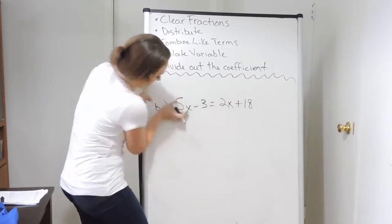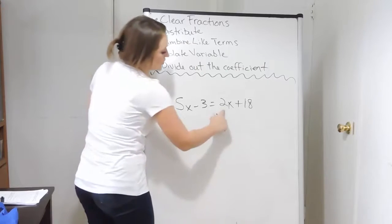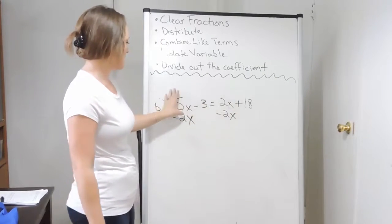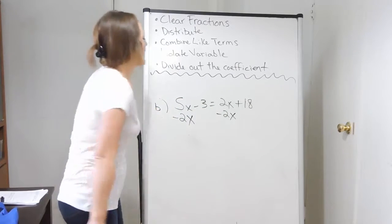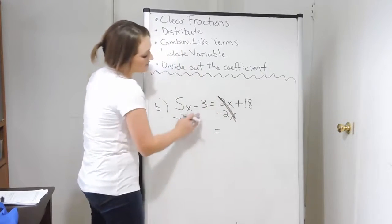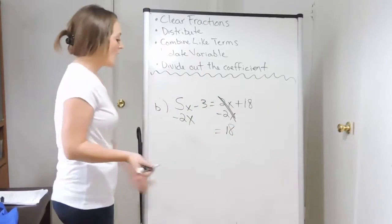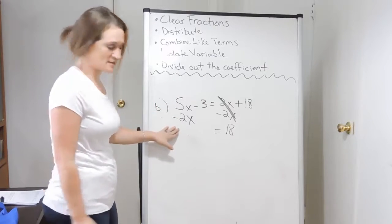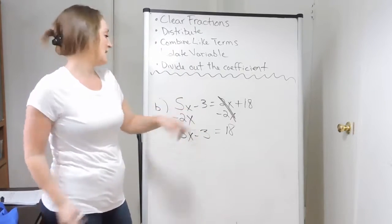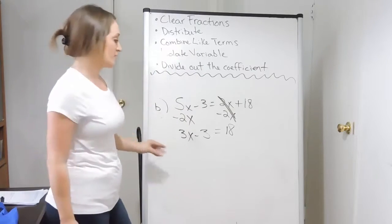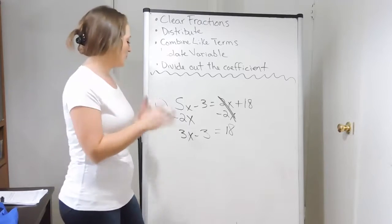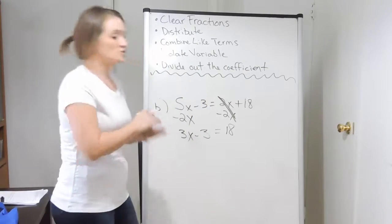I'm going to pick the left-hand side, getting my x's together over here and my numbers together over there. Here I have a 2x — it's positive, so I'm going to subtract it from both sides. Remember, you can only subtract an x with an x, a number with a number — like things. On the right-hand side, 2x minus 2x cancels, leaving only 18. On the left-hand side, 5x minus 2x is 3x, and drop down that minus 3. When it comes to solving equations, make sure you do keep it to one step per line — don't get ahead of yourself; that's where mistakes tend to be made.